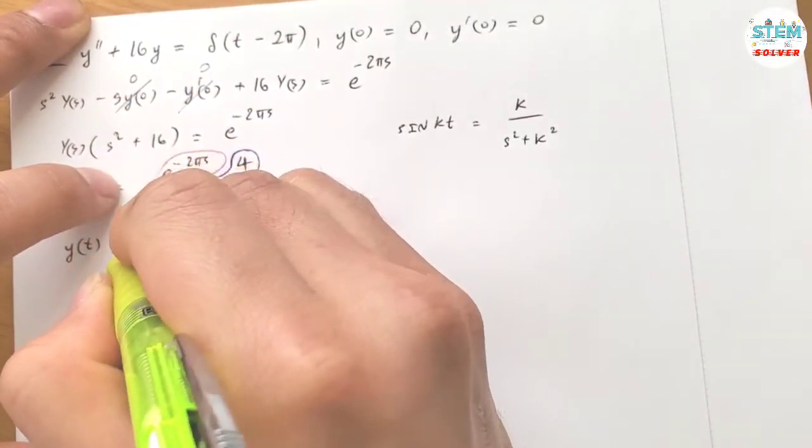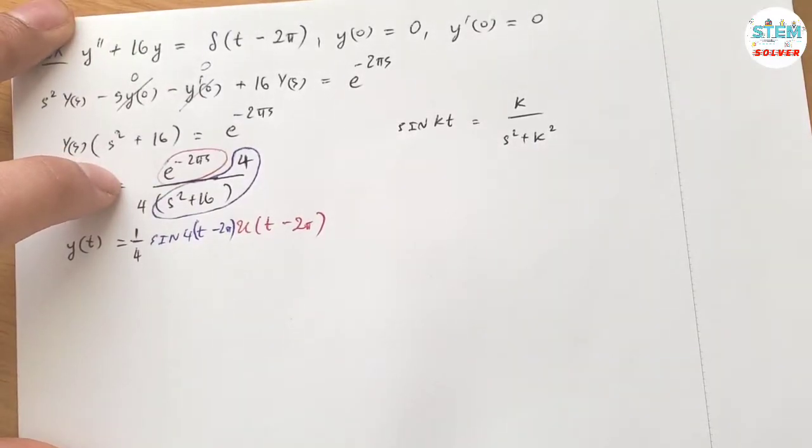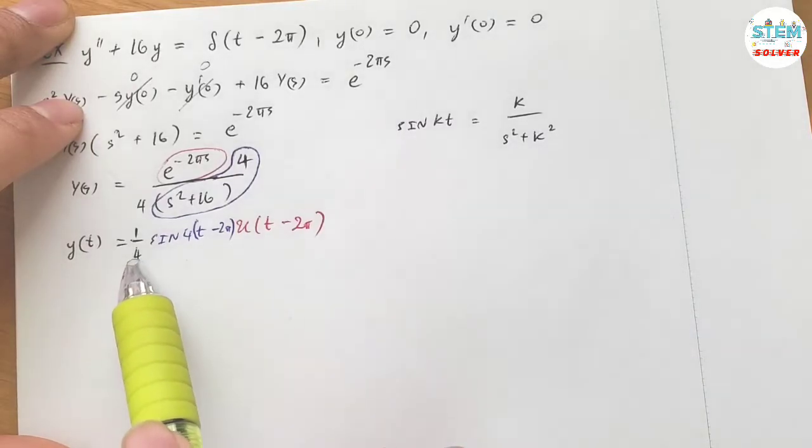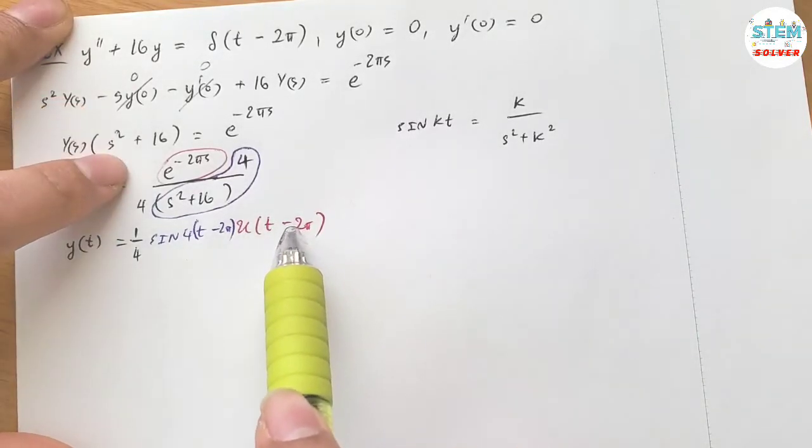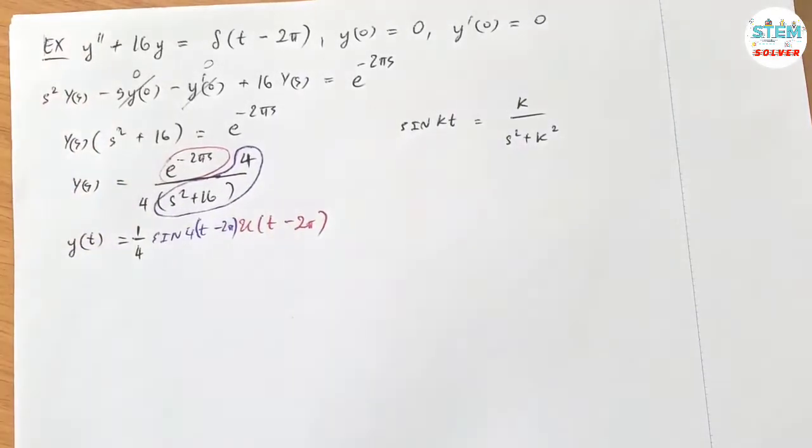And don't forget, you have 1/4 in front, right? So, now, if you want to double check, you just take the Laplace transform of all of this, and it should definitely give you this one. So this is your final solution, that's it.